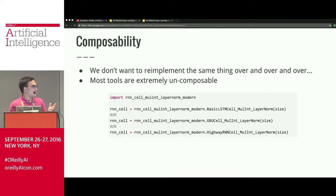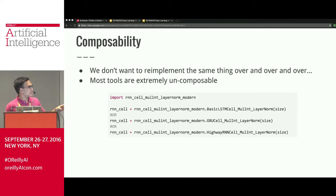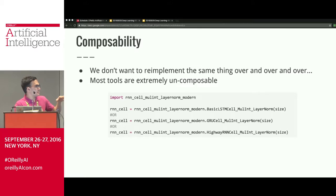Composability is a huge issue. As software people, we don't want to reimplement the same thing over and over, but most tools are extremely uncomposable. You get things like multiplicative integration, layer norm, and modern RNN variants — LSTM, GRU, highway — all requiring separate implementations for each combination of features. What happens when you add a new type of cell or a new trick? You have to redo or multiply everything. It's a really problematic design that's indicative of the tools we're using.